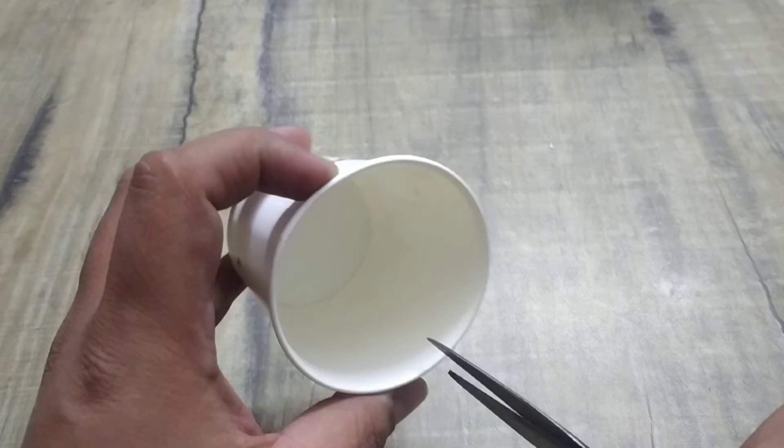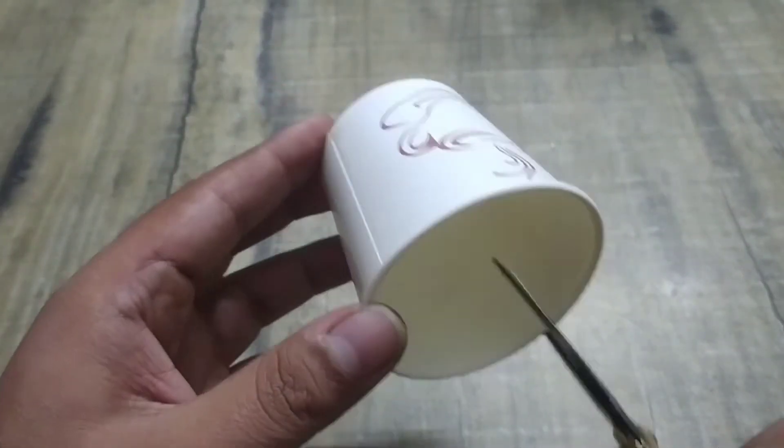Now we take a cup, make two oblong notches on it on the opposite sides.